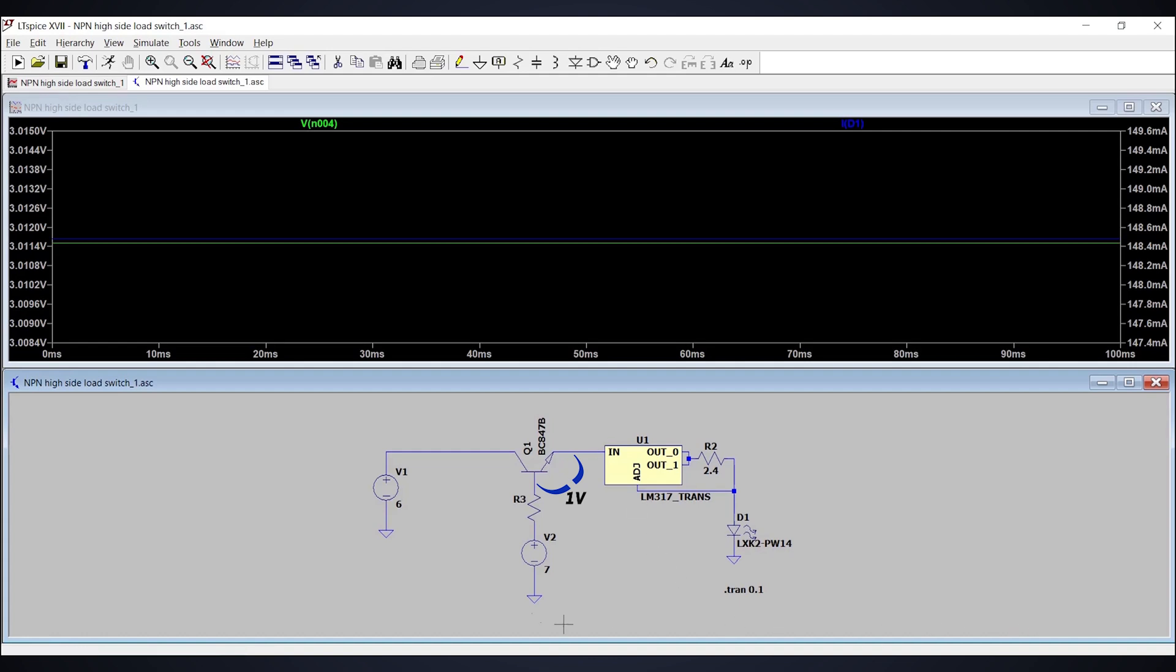However, this is a simulation. But in real world application, the input voltage is 6 volts itself. Then how can we get a supply of 7 volts in the actual circuit?